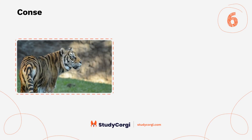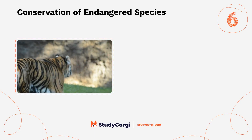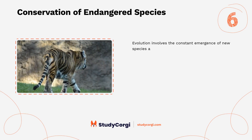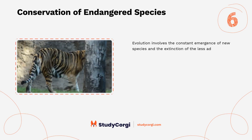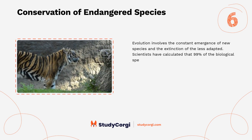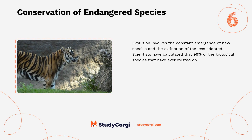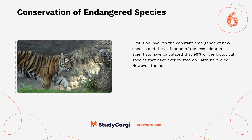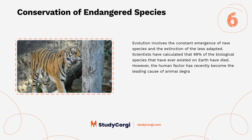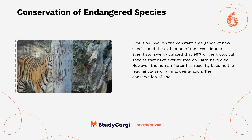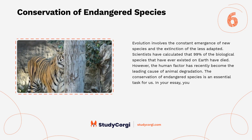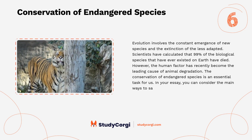Conservation of Endangered Species. Evolution involves the constant emergence of new species and the extinction of the less adapted. Scientists have calculated that 99% of the biological species that have ever existed on Earth have died. However, the human factor has recently become the leading cause of animal degradation. The conservation of endangered species is an essential task for us. In your essay, you can consider the main ways to save endangered species.